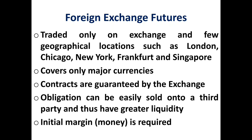Future contracts can take place only through the foreign exchange market, so contracts are guaranteed by the exchange, and obligations can be sold to a third party. It involves a greater amount of liquidity as well as flexibility. In the forward market, an initial margin of money is not necessary, but in the futures market an initial margin is required. Compared to the forward market, foreign exchange futures are for smaller amounts, but have grown very rapidly in recent years to meet the needs of small customers.